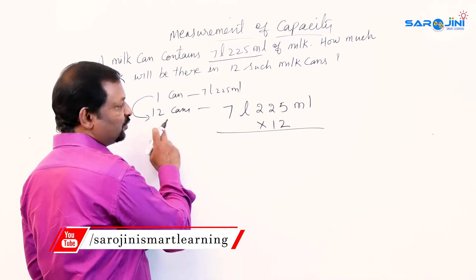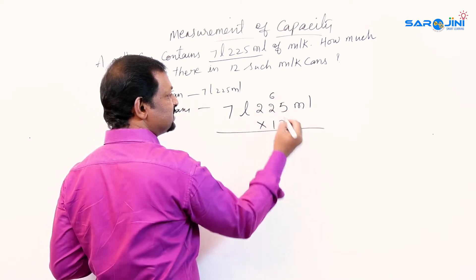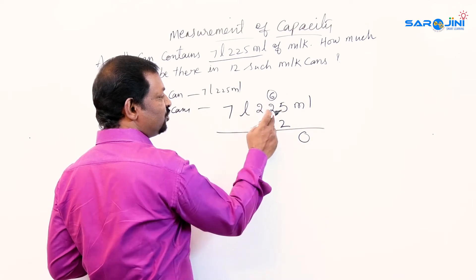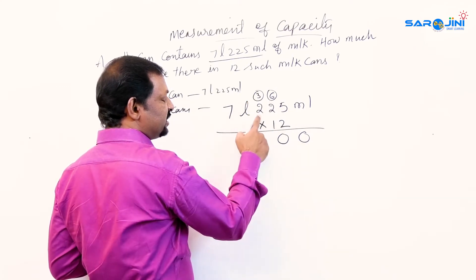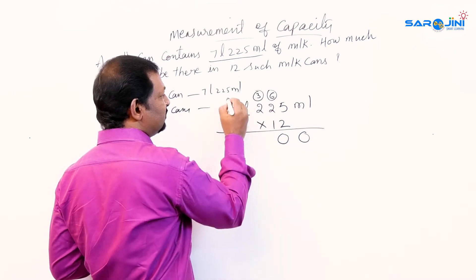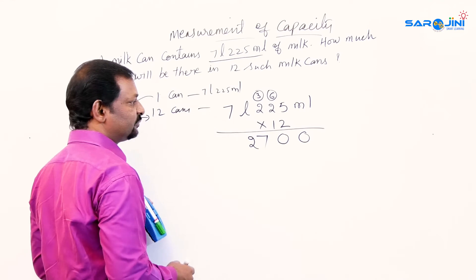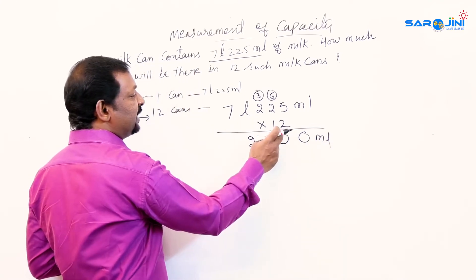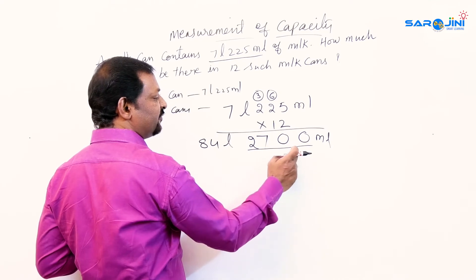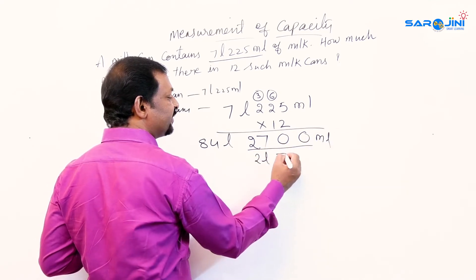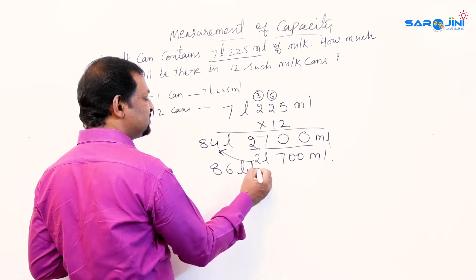If you know the 12 times table you can do this directly. 12 times 5 is 60, write 0 carry 6. 12 times 2 is 24, plus 6 is 30, write 0 carry 3. 12 times 2 is 24, plus 3 is 27. This is under milliliters. Now 12 times 7 is 84, this is liters. We got 2700 milliliters — 2000 milliliters equals 2 liters, leaving 700 ml.